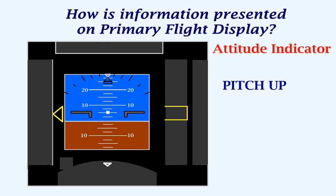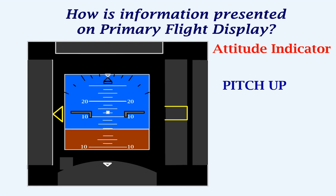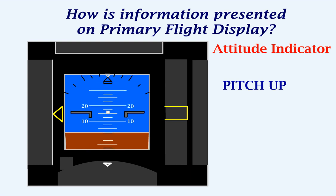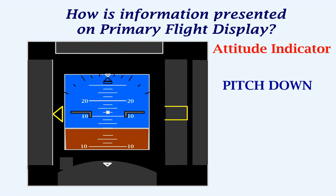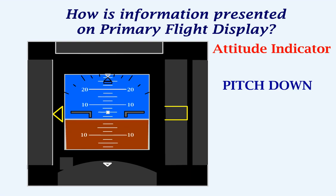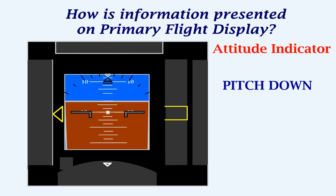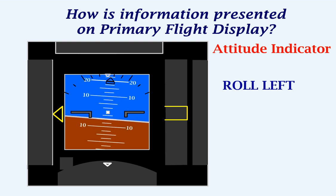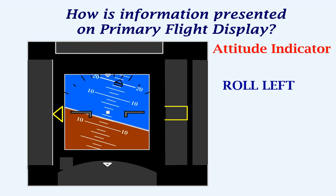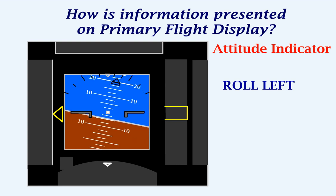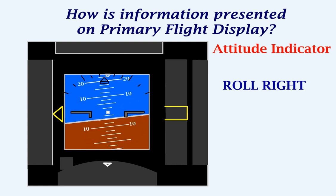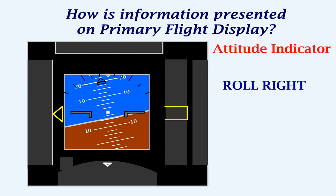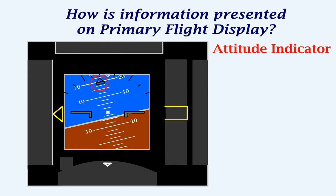A pitch up of the aircraft will be shown like this. A pitch down of the aircraft will be shown like this. A roll towards the left will be shown like this. A roll towards the right will be shown like this. This symbol moves along a scale which gives us the bank angle.